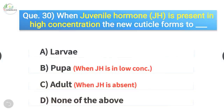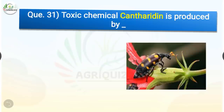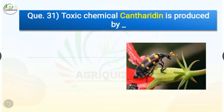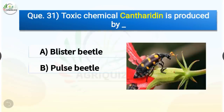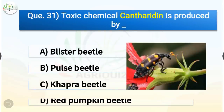Question number 31. Toxic chemical cantharidin is produced by which insect? The options are blister beetle, pulse beetle, khapra beetle, or red pumpkin beetle. The correct answer is option A, blister beetle. Toxic chemical cantharidin is produced by blister beetle.